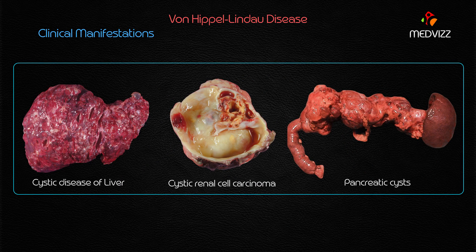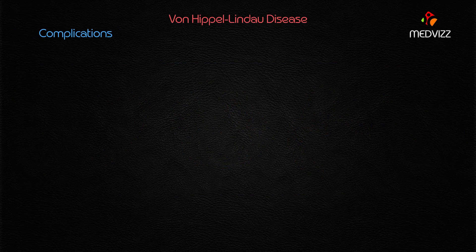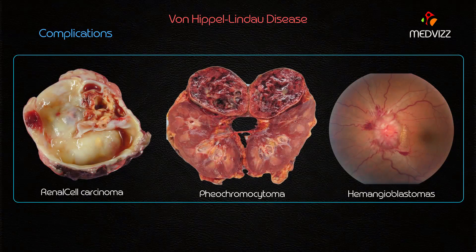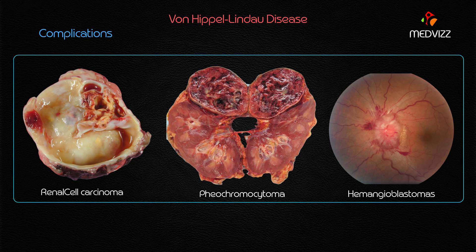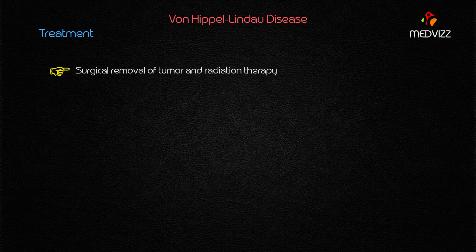Other organs involved include adenomas and cysts of the liver, kidney, and pancreas. Importantly, von Hippel-Lindau is responsible for an increased incidence of renal cell carcinoma, which is the most important complication. Other associated tumors include pheochromocytoma and ocular hemangioblastomas. Treatment options include surgical removal of the tumor as well as radiation therapy.